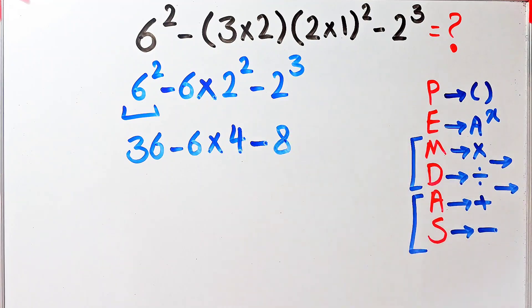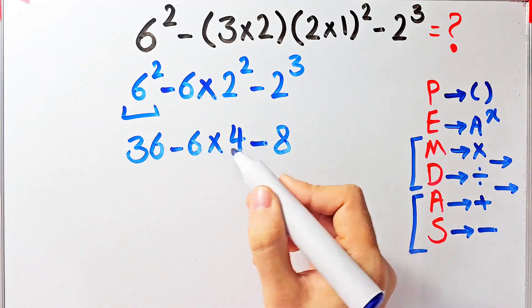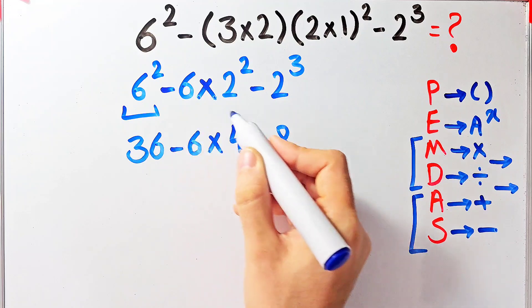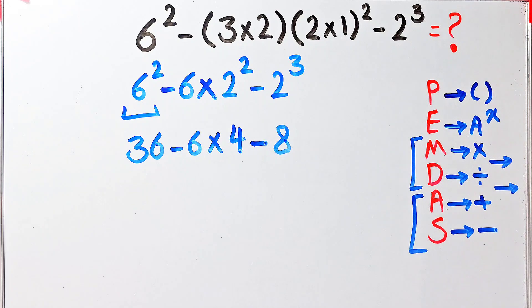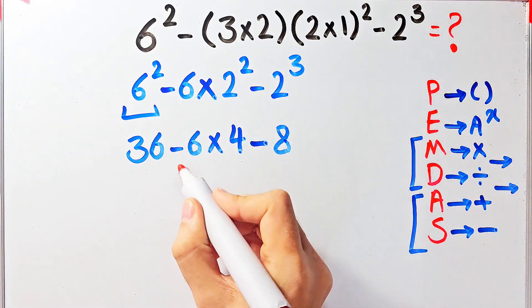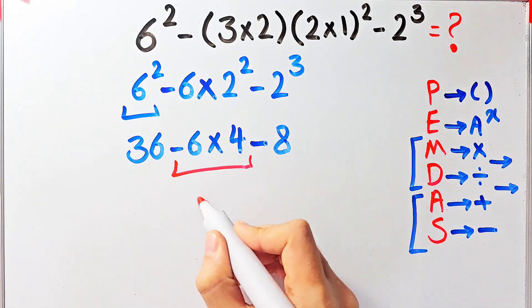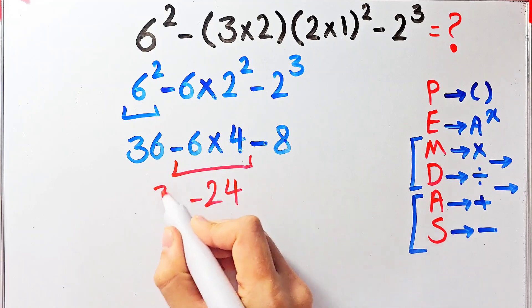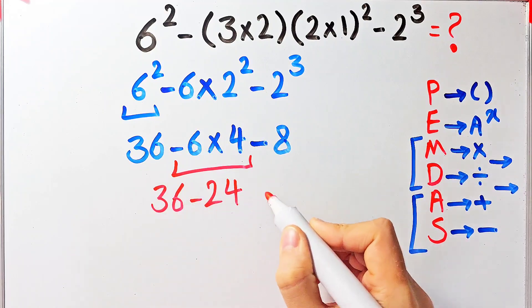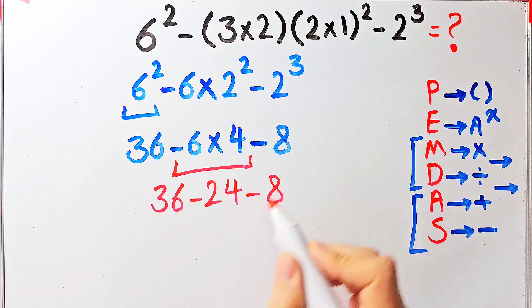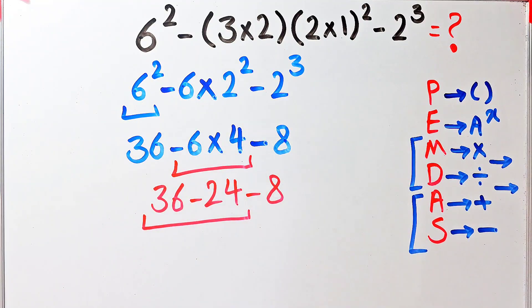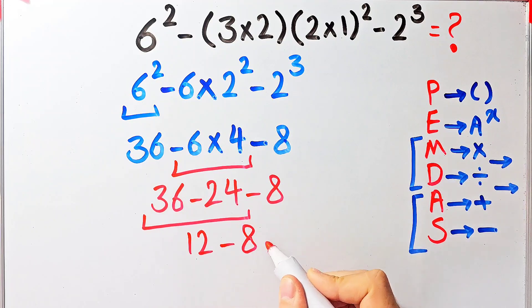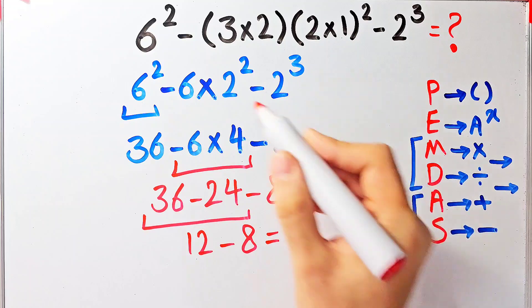Now in this expression we have subtraction and multiplication. First we simplify the multiplication because multiplication has higher priority than subtraction: negative six times four equals negative 24. Now we have 36 minus 24 minus 8. 36 minus 24 equals 12, and 12 minus 8 equals 4. The final answer of this question equals 4.